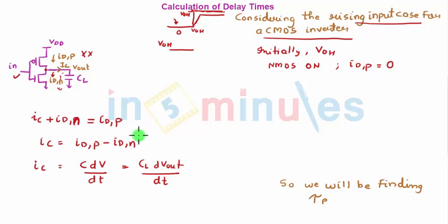So if I put that here in equation 1, what I get is nothing but IC equal to minus IDN for this case, where IC itself is nothing but CL dVout/dt equal to minus IDN. Let's call this equation 2, and this will be very important in our analysis.